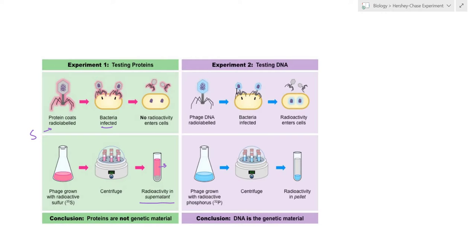Whereas when they radiolabeled the DNA with phosphorus then it was found that the radioactivity was in the pellet at the bottom indicating that the phosphorus was majorly present with the cells inside the pellet, disproportionately present with the cells in the pellet and hence the DNA was also present within the cells storing the genetic information and being transferred from the virus to the cell.